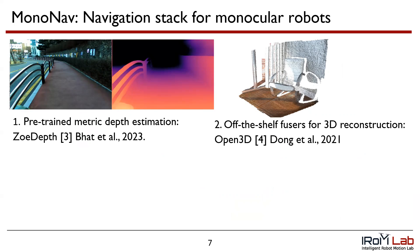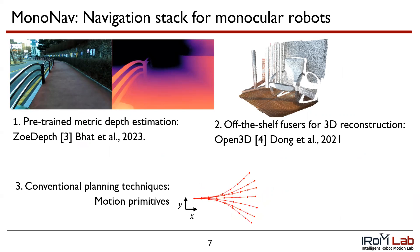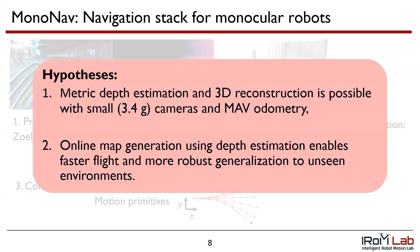MonoNav uses ZoeDepth for per-frame depth estimation and uses Open3D's tensor-based TSDF fuser. To determine the MAV's next control input, we search over a set of motion primitives generated offline to determine a collision-free trajectory to the goal state. MonoNav operates off the following hypotheses: one, metric depth estimation and 3D reconstruction is possible with small, 3.4-gram cameras and MAV odometry; and two, online map generation using depth estimation enables faster flight and more robust generalization to unseen environments.